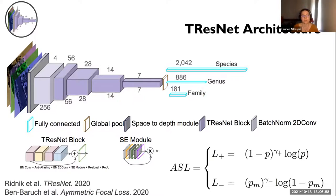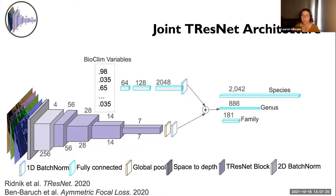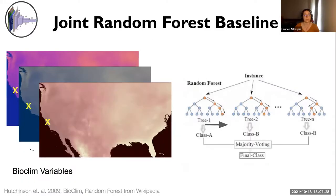The TResNet architecture was designed with a novel loss function called asymmetric focal loss — designed for multi-label image recognition tasks, which downweights the loss from negative classes without ignoring them completely, to deal with that long-tailed distribution we discussed earlier. We also looked at a joint version of this model predicting not just from satellite imagery alone, but also from Bioclim environmental variables in a jointly trained fashion. The two baselines we compare against are a simple multi-response joint random forest model fitted with the same bioclimatic environmental variables, and Maxent — run for each individual species with probabilities aggregated across observations.